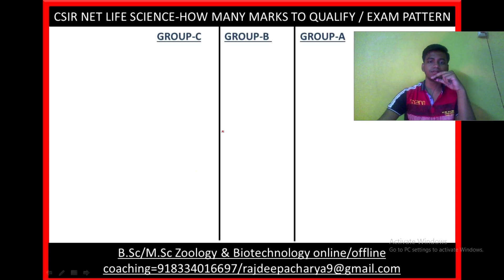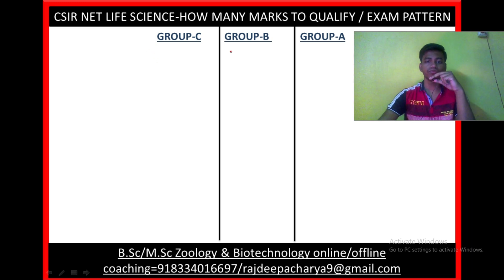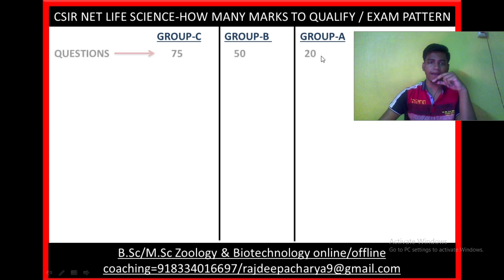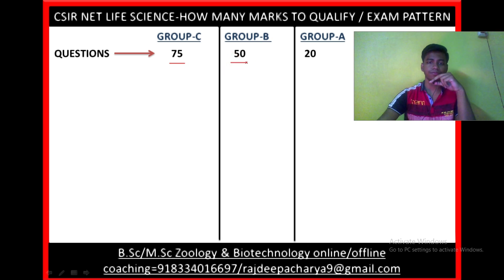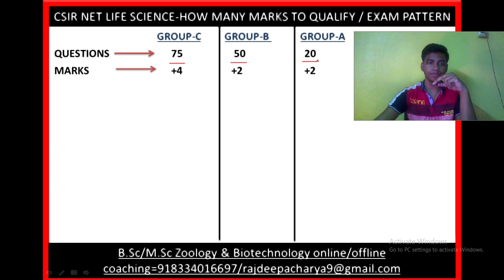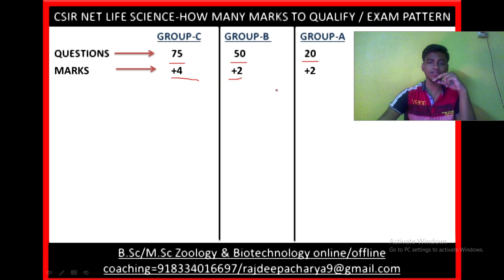The CSIR Net Life Science question paper is divided into three groups: Group C, Group B, and Group A. Group C contains 75 questions, Group B contains 50 questions, and Group A contains 20 questions. Each question from Group C carries 4 marks, each question from Group B carries 2 marks, and each question from Group A carries 2 marks.